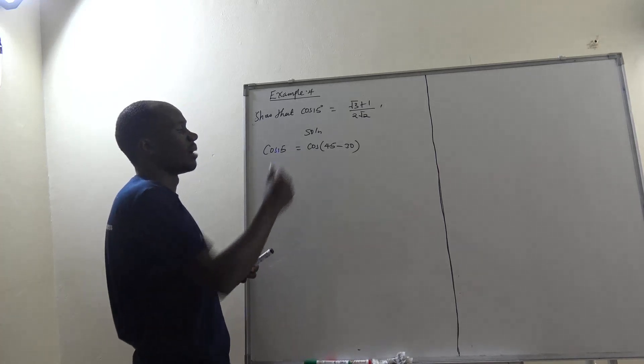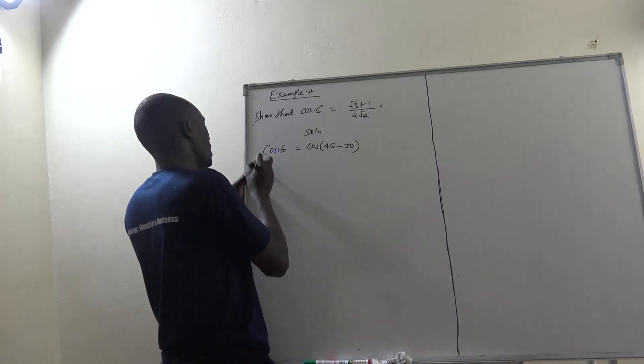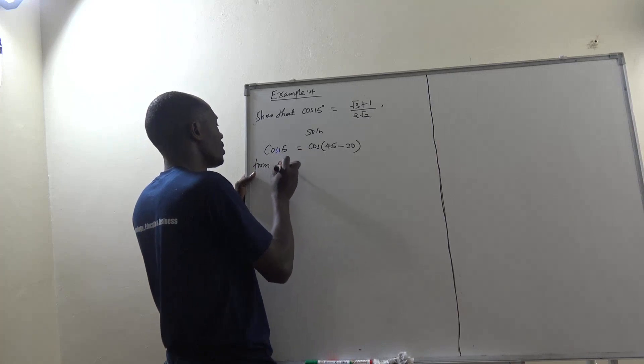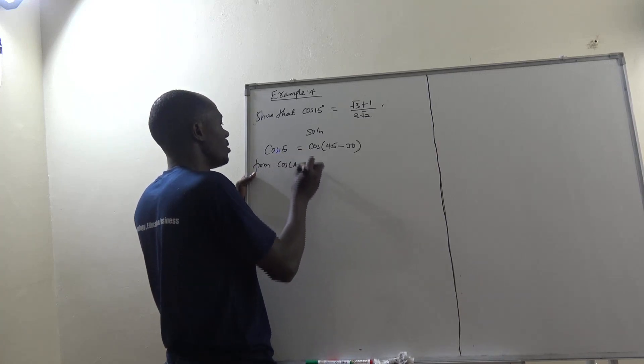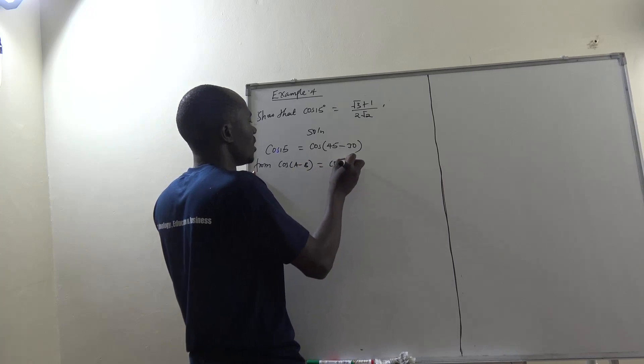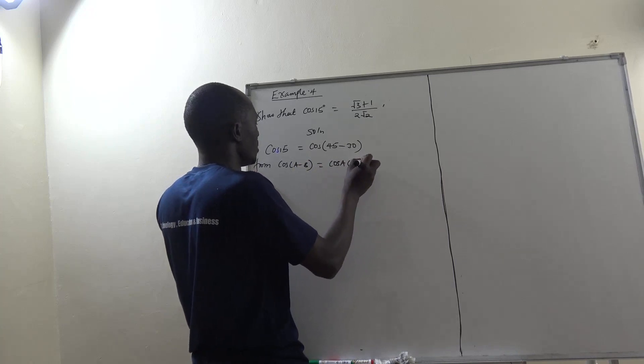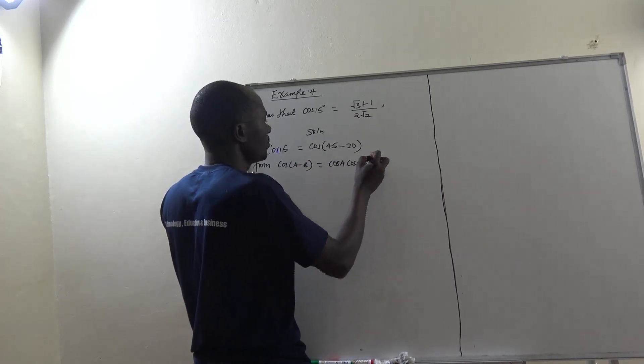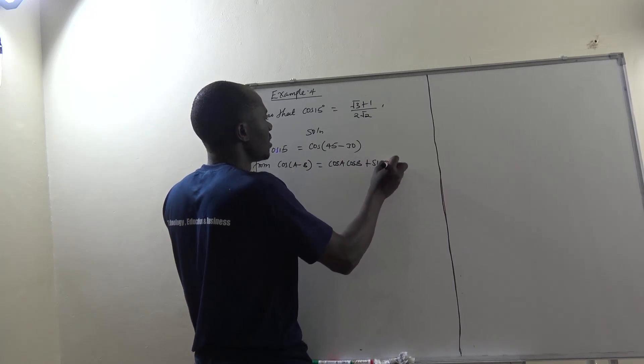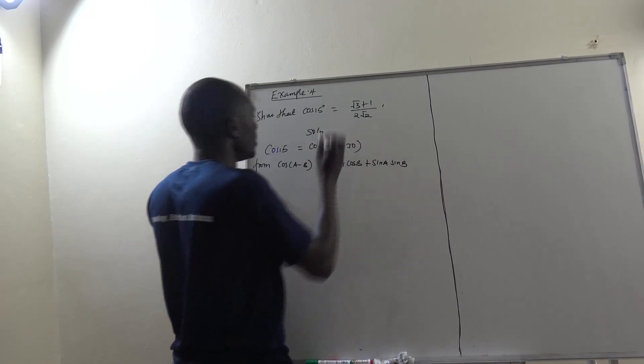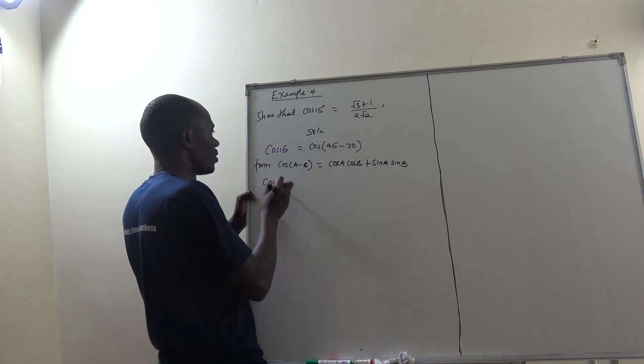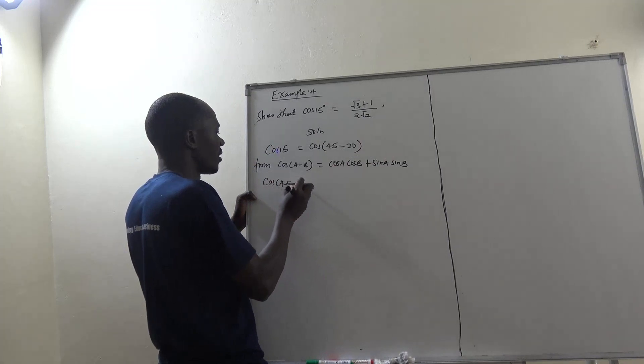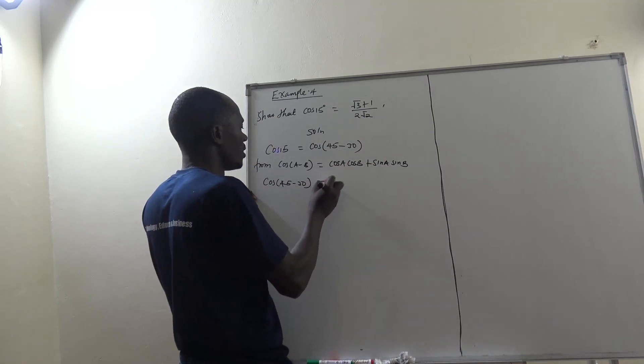Then we go ahead and apply our formula. We say cos of A minus B is the same as cos A cos B plus sin A sin B. So we can substitute: cos 45 minus 30 is the same as what?